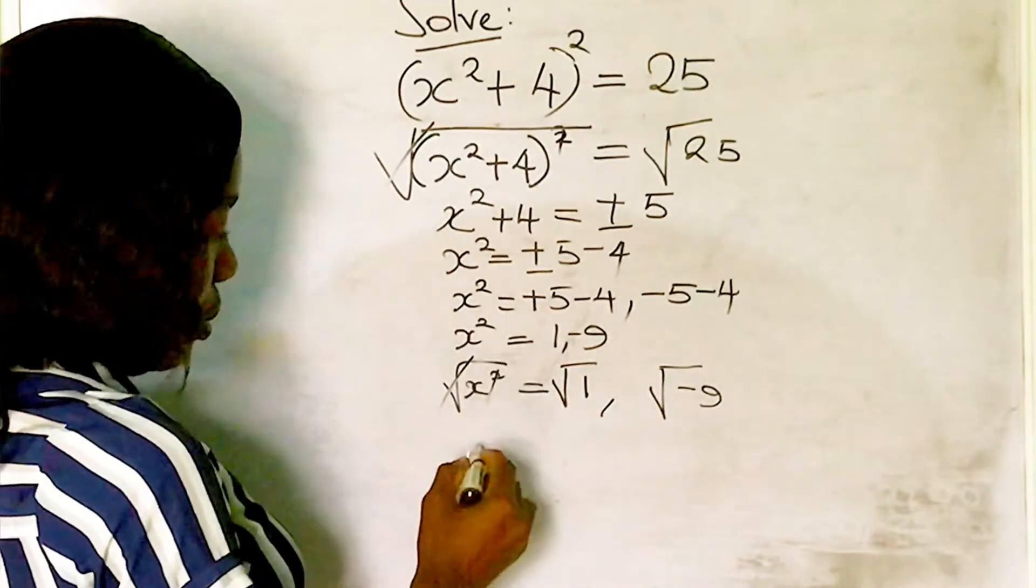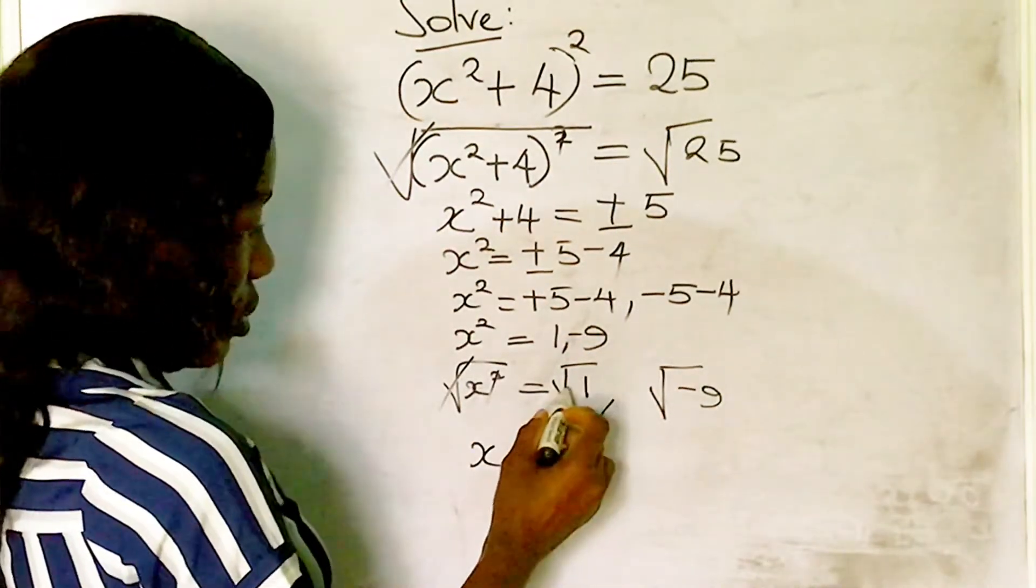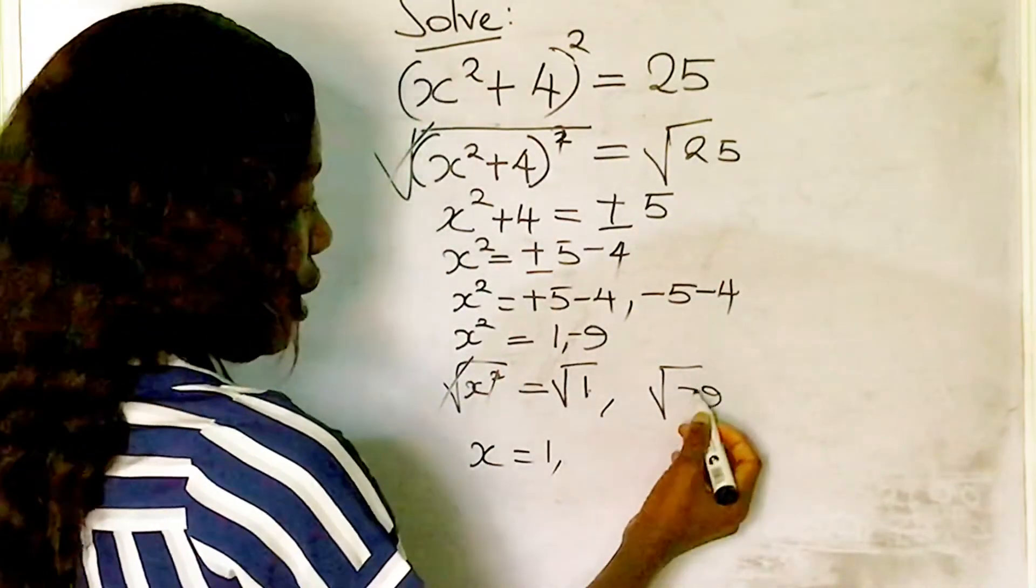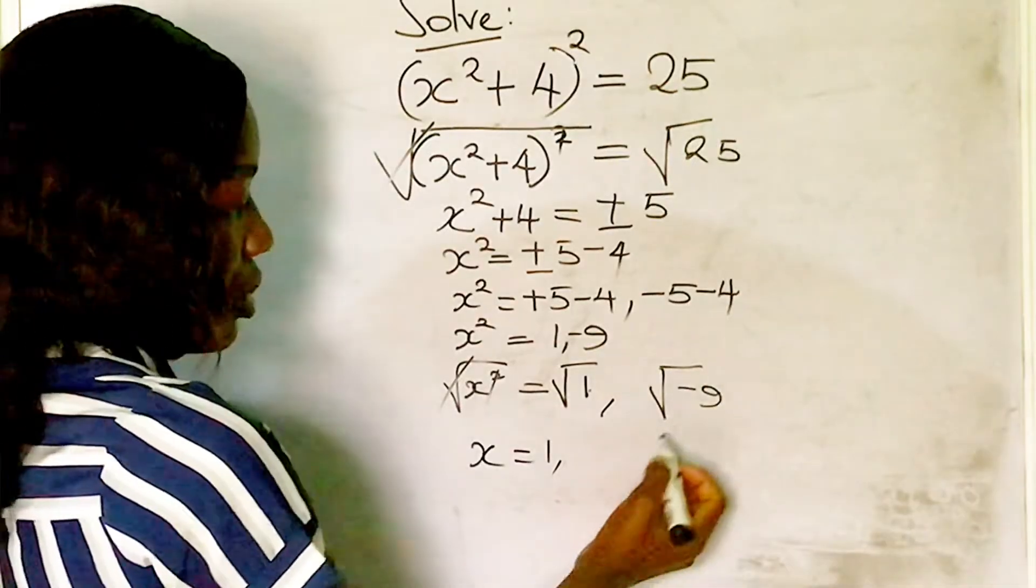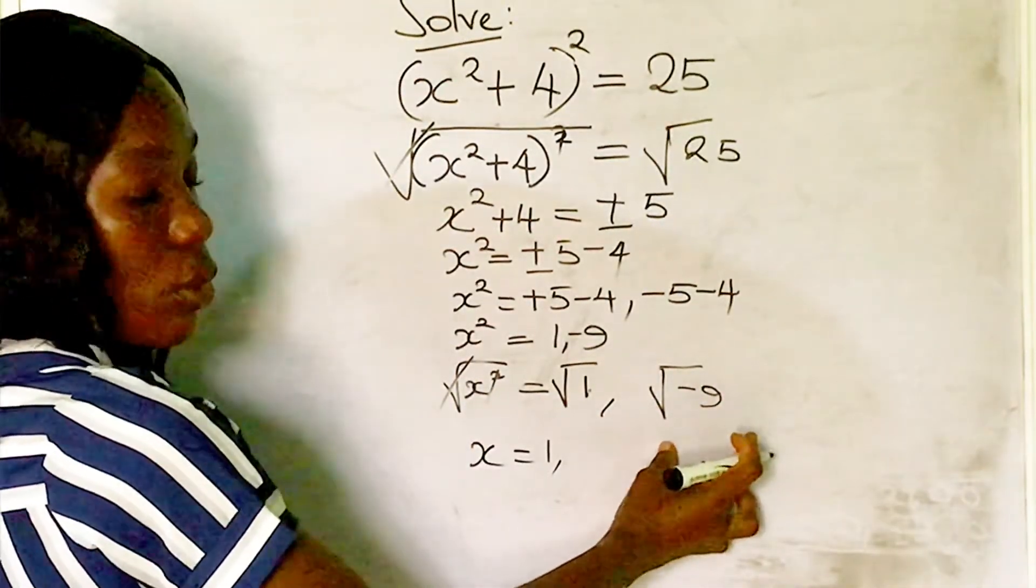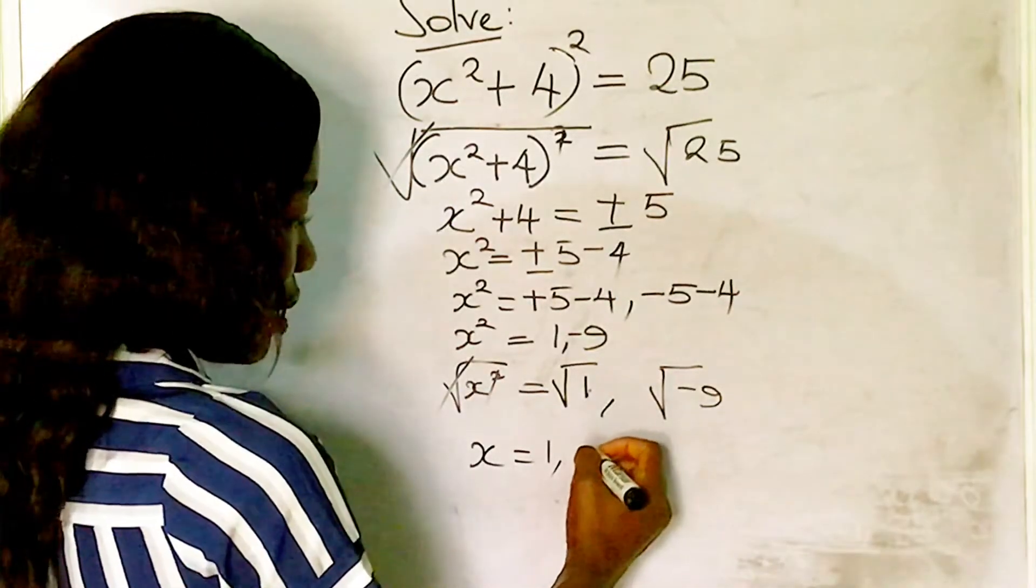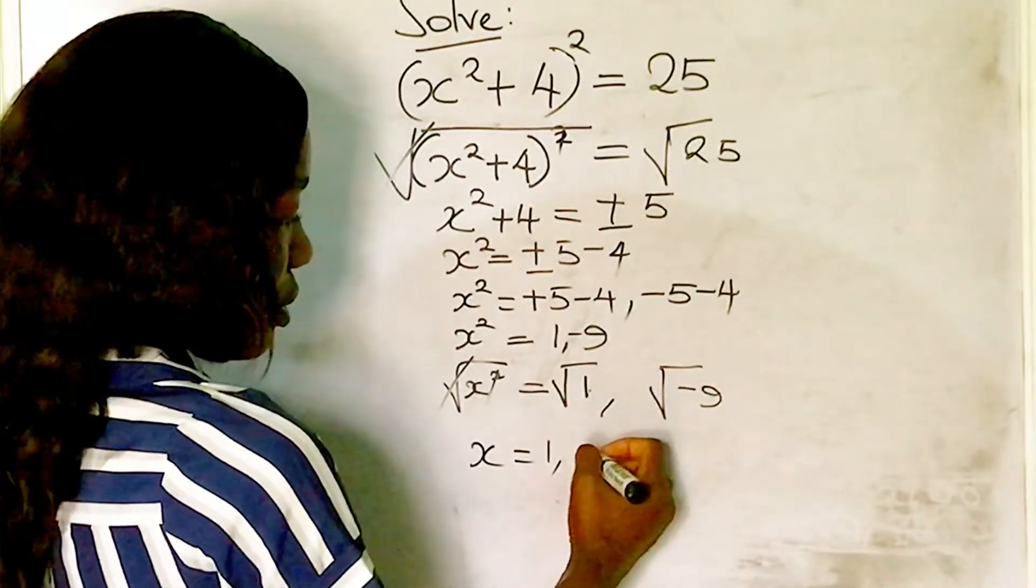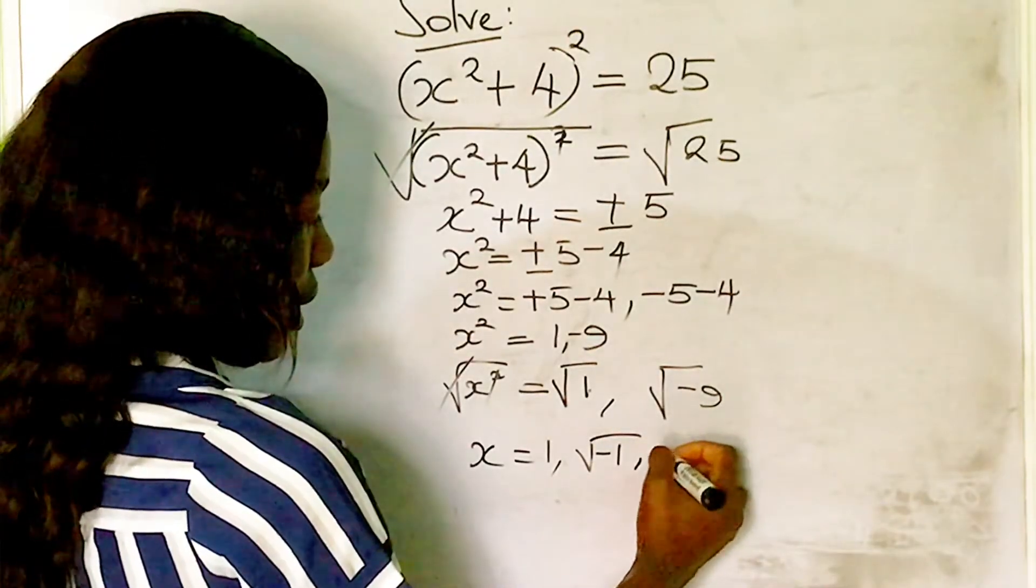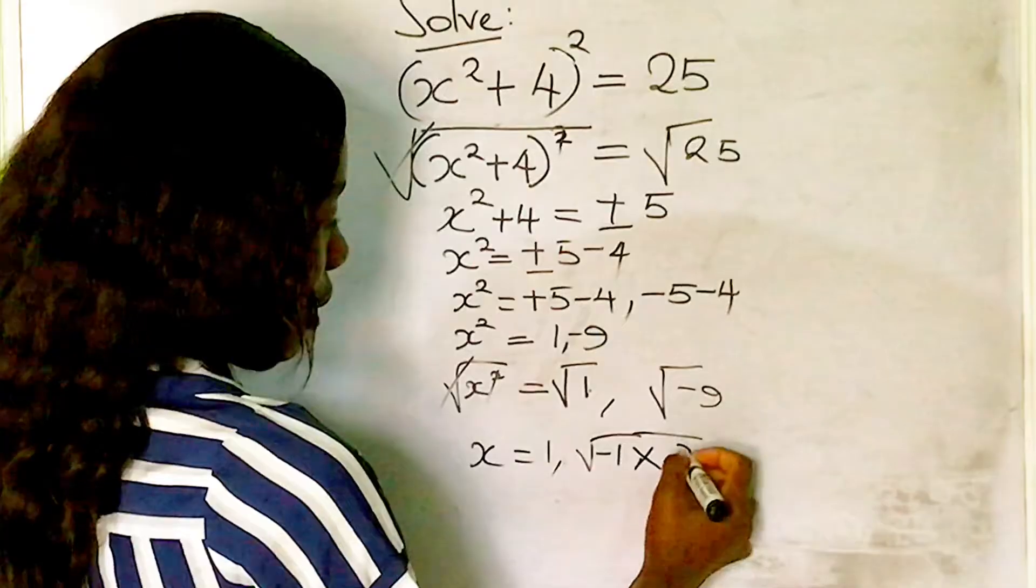The square and square root cancel, leaving x = √1 = 1. For the other equation, we have √(-9), which is not a real number. To express it as a complex number, we split this into √(-1) × √9.